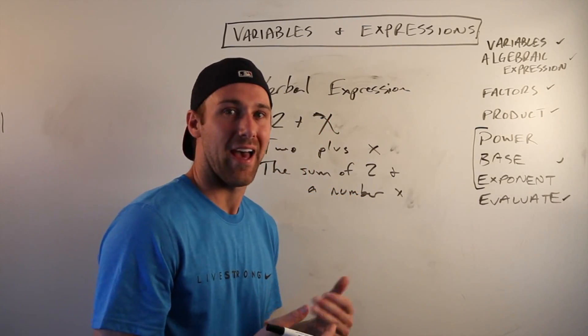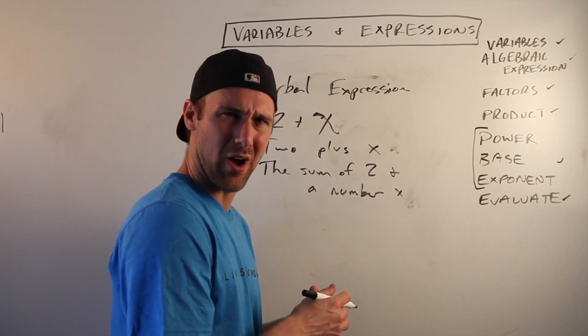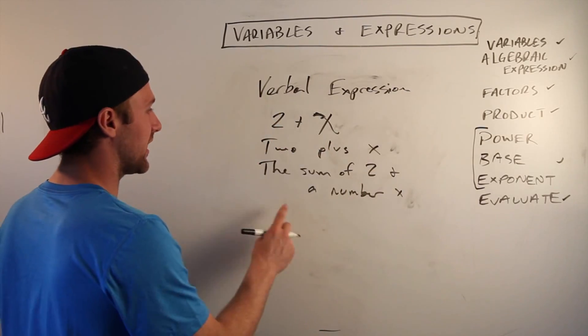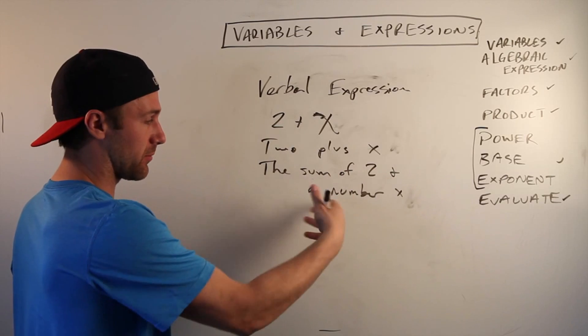And then you'll get like a letterman jacket for being so good at math. That's a pi symbol. What? So two plus x and then the sum of two and a number x.